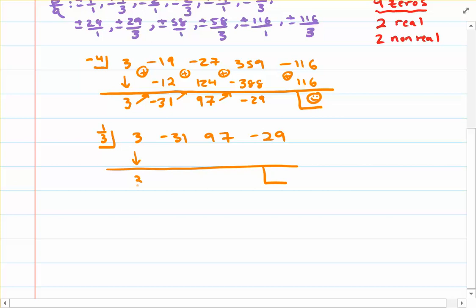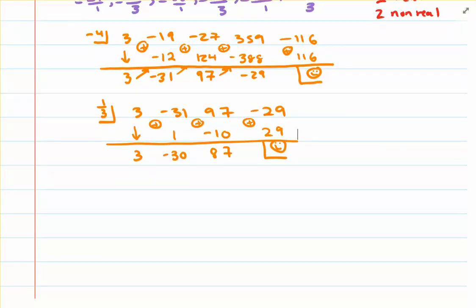Drag the 3 down. 1 third times 3 gives us positive 1. Adding down, negative 31 plus 1 is negative 30. Multiplying 1 third times negative 30 gives us negative 10. 97 minus 10 is 87. Then 1 third times 87 gives us positive 29. These two cancel out — we get another remainder of zero. So we have two real zeros now verified: negative 4 and 1 third.